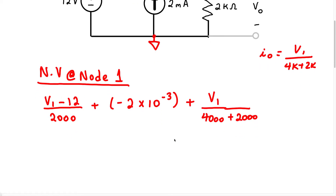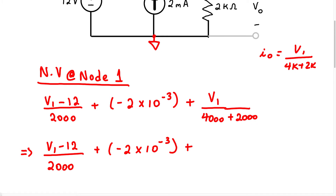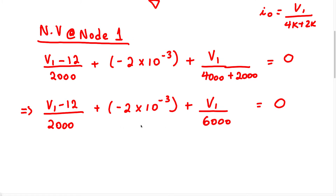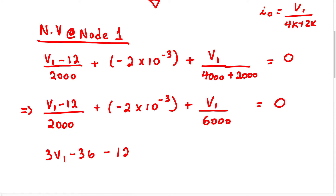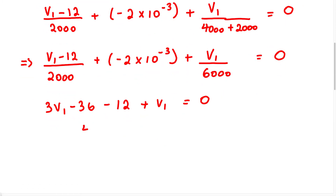So we have V1 minus 12 over 2,000, plus negative 2 times 10 to the negative 3, plus V1 over 6,000, all equal to 0. The LCD is 6,000, so we multiply each term by 6,000. Therefore we get 3V1 minus 36 minus 12 plus V1 equals 0. Simplifying gives us 4V1 equals 48, therefore V1 equals 12 volts.